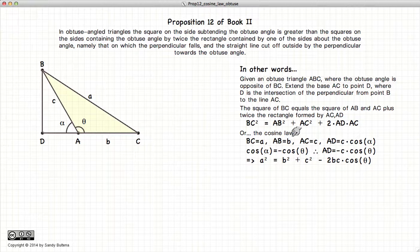Substituting all of this information into what is stated in the proposition, we end up that a squared is equal to b squared plus c squared minus 2 times b times c times cos of theta. And this is the cosine law. So this proposition is essentially the cosine law for obtuse triangles.